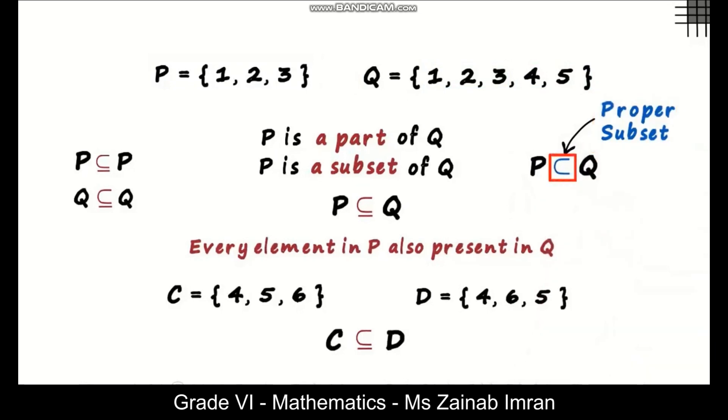And this tells us that all elements of P are present in set Q but there is at least one element in Q which is not present in P. We can see that 4 and 5 are not present in P. So that's the concept of a proper subset.